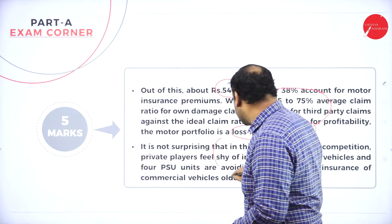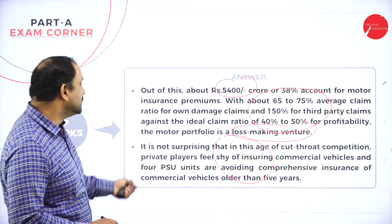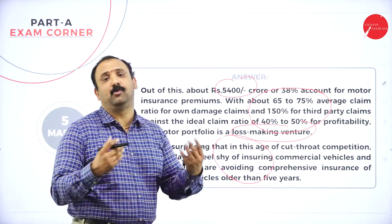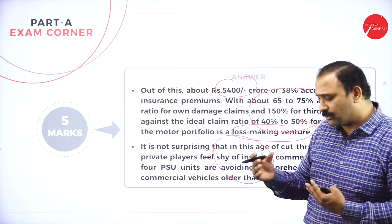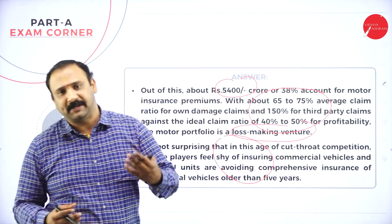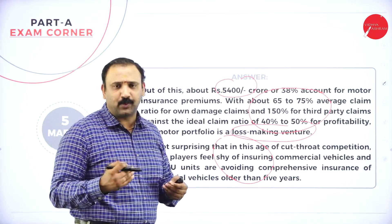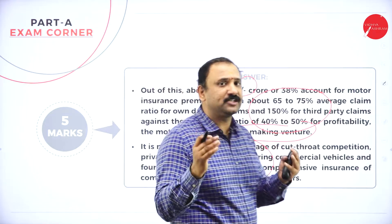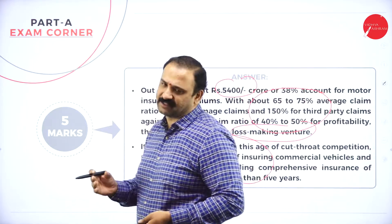It is not surprising that in this age of cutthroat competition, private players and PSU units insuring commercial vehicles will try to avoid comprehensive policies for vehicles that are more than five years old. As the age of the vehicle goes higher, the premium is high and claims also go on the higher side because the chances of that vehicle getting into an accident-prone zone will be higher. Companies will try to understand the salvage value — what loss is remaining about the asset and how to minimize it.